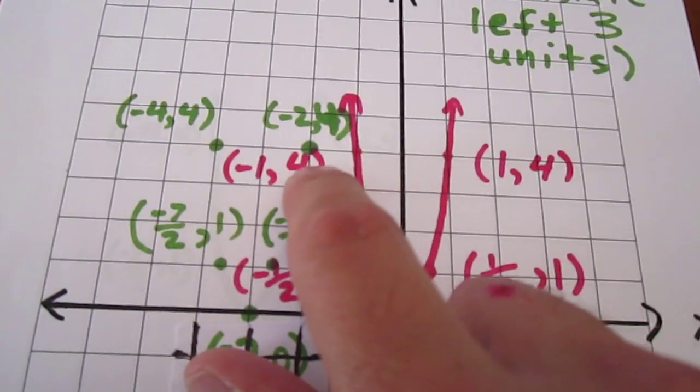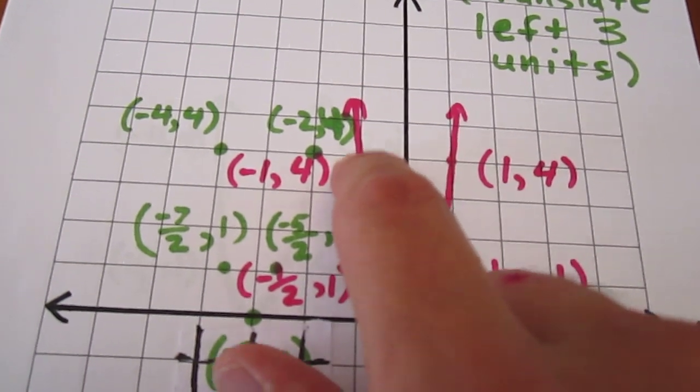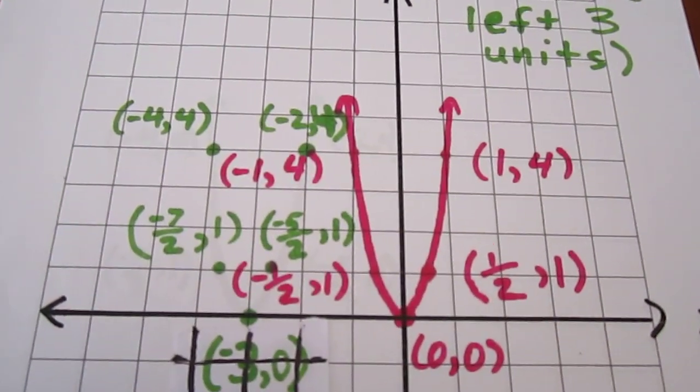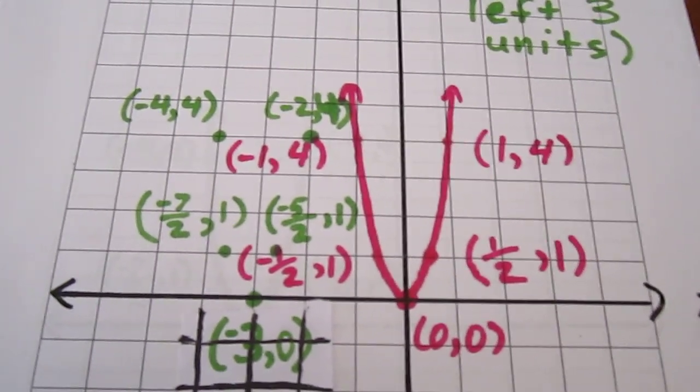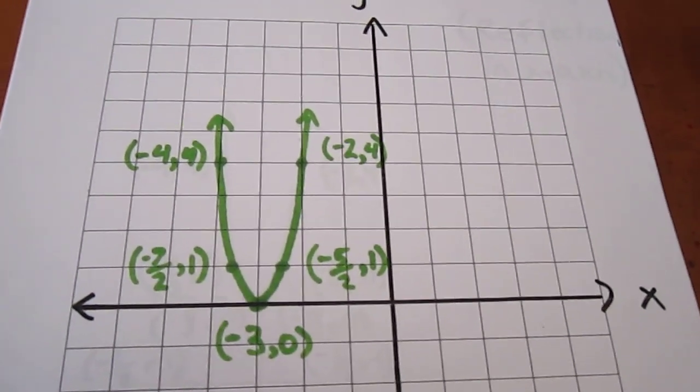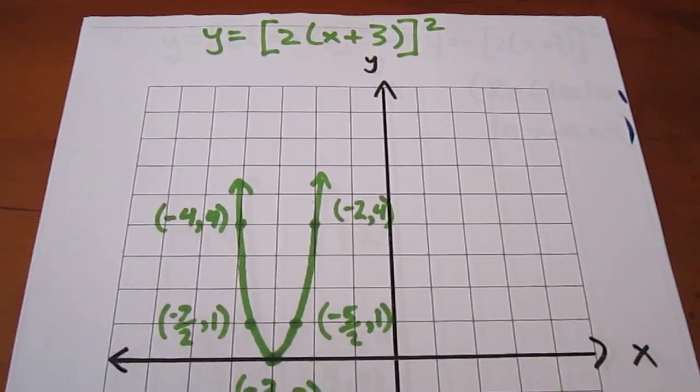1, 4 becomes negative 2, 4. And negative 1, 4, which is where my finger is, gets moved over to negative 4, 4. We can then ignore the pink curve and focus on the green. And there we go. So we're now two transformations into our 4 transformation process.